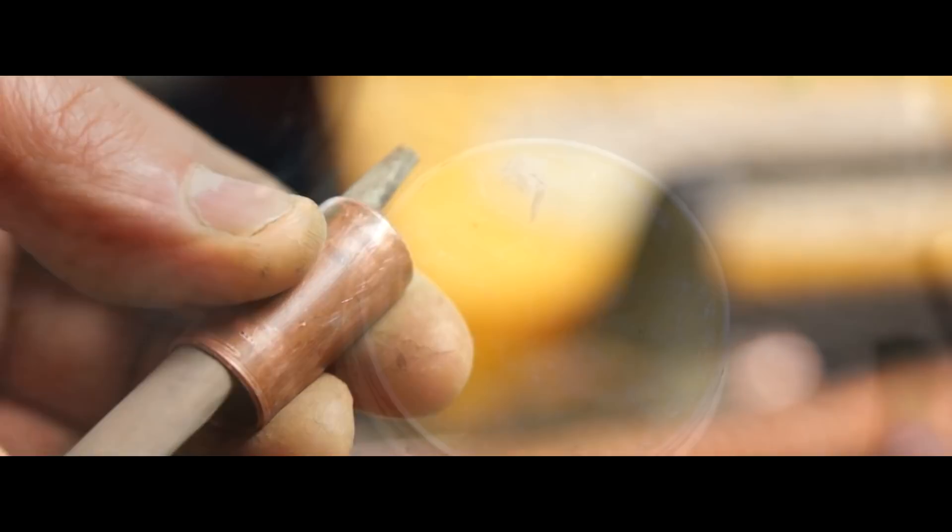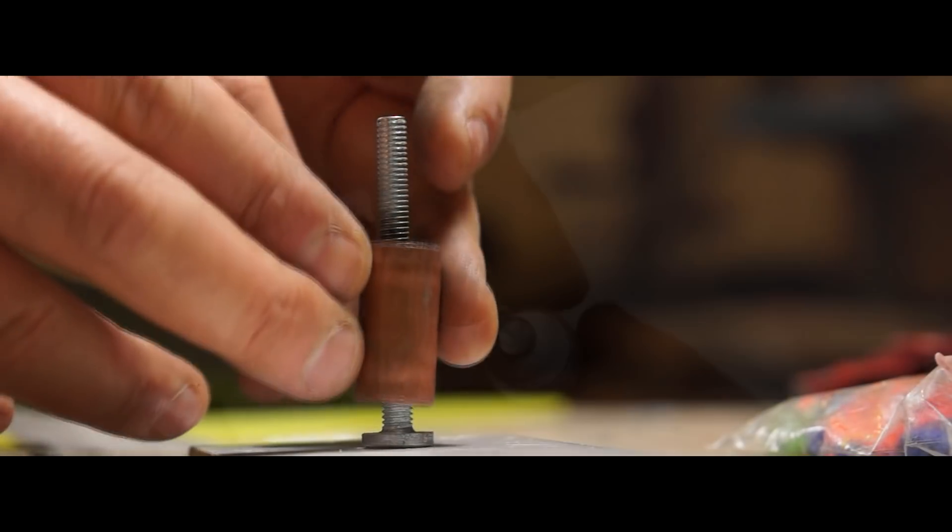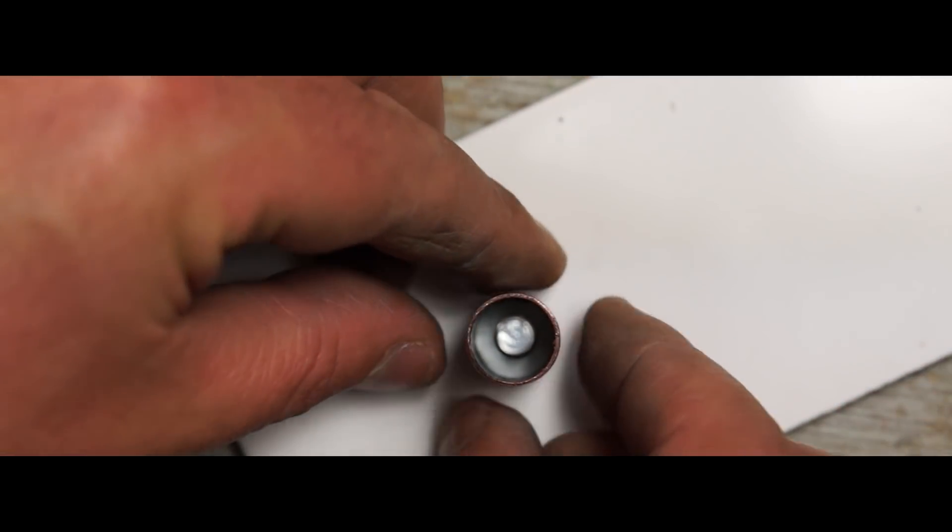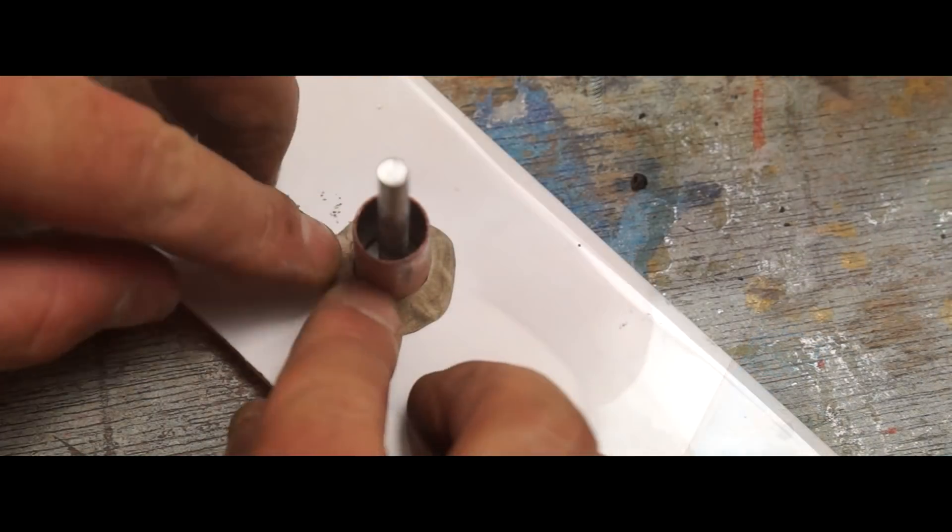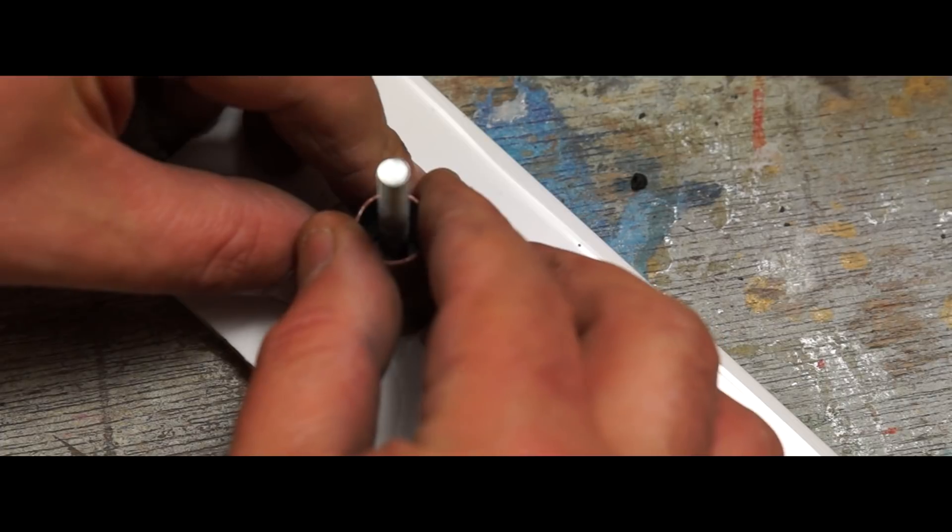To prevent anything sticking in there, I lubed it up with plenty of Vaseline. Once I'd placed it over the bolt head, I added a ring of modelling clay to prevent any material leaking out from what was going to be the mould.